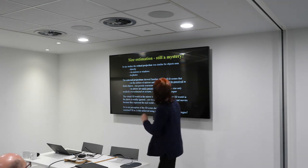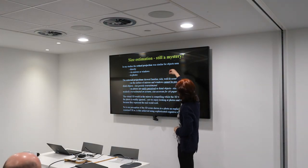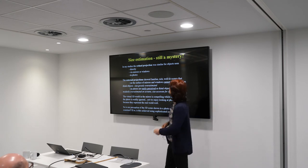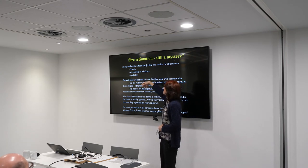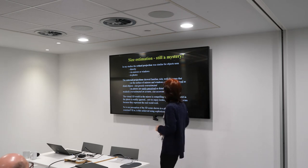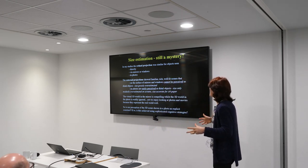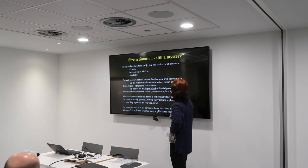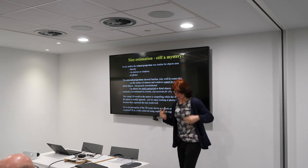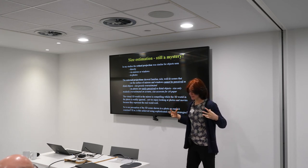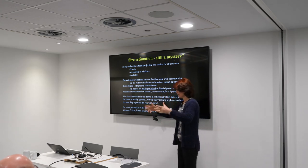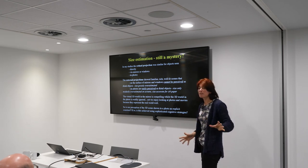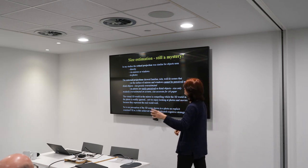Looking at the results I've been showing you, the retinal projection should have been quite similar for the objects I was showing to people, whether they were direct in the real world, seen via mirrors and windows, or depicted in a photo — all showing familiar, rich, well-lit scenes. But the projections on the surface of mirrors and windows simply didn't seem to be perceivable as distal objects. We cannot help ourselves seeing through the window or into the virtual world shown in the mirror, whereas the 3D world in a photo seems very readily ignored — at best you get this kind of weak scaling effect.